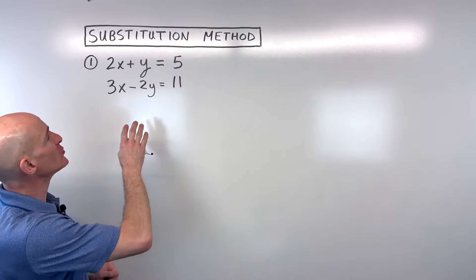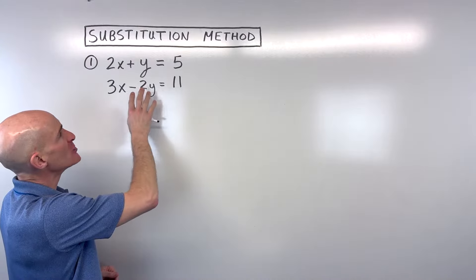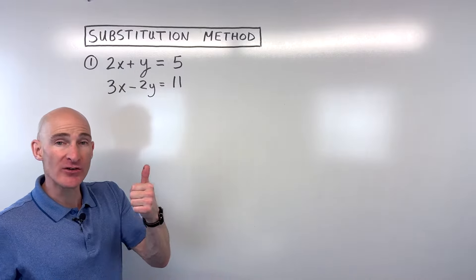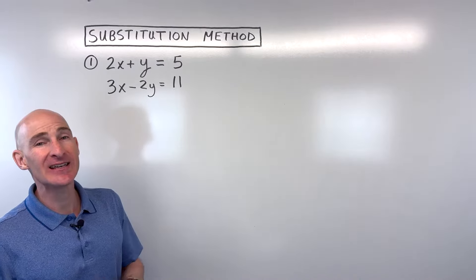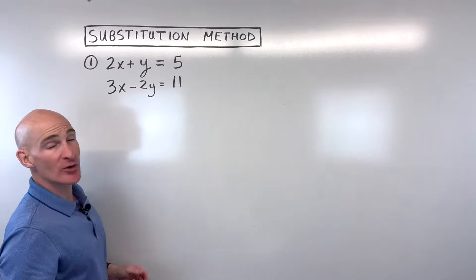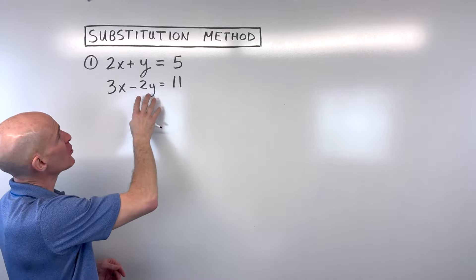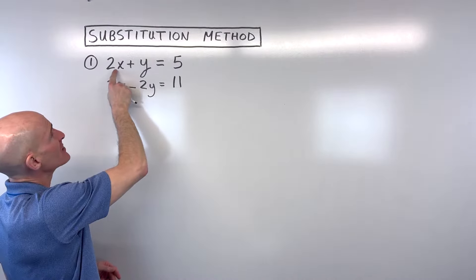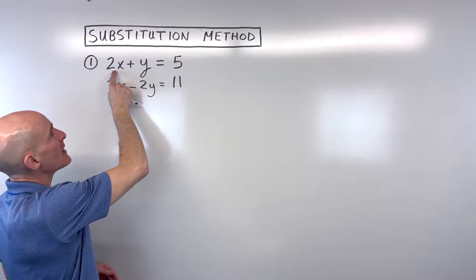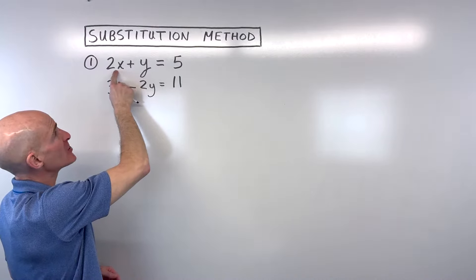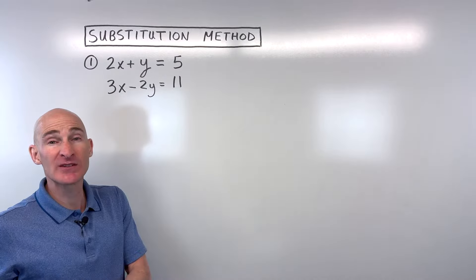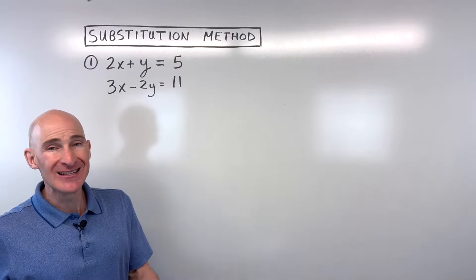The first thing you want to do when you do the substitution method is solve for one of the variables, either x or y, one that's easy to get by itself on one side of the equal sign. Now when I look at these two equations, I notice that this one has a coefficient of two. If I try to solve for this x here, I'd eventually have to divide by two, and that would give me some fractions, which makes it more difficult.